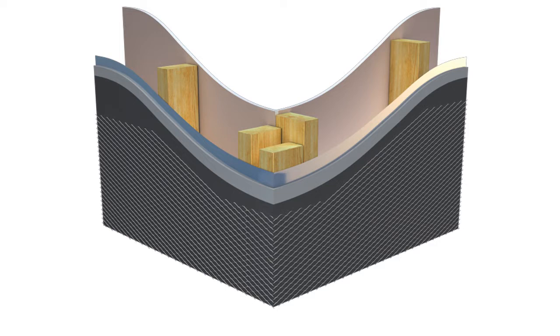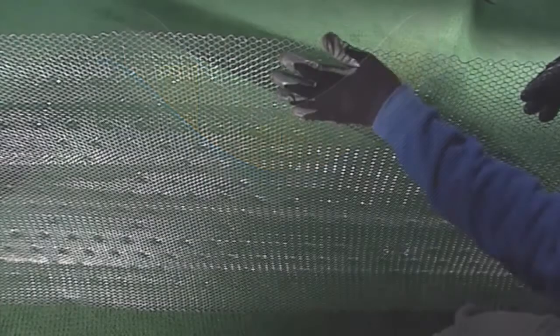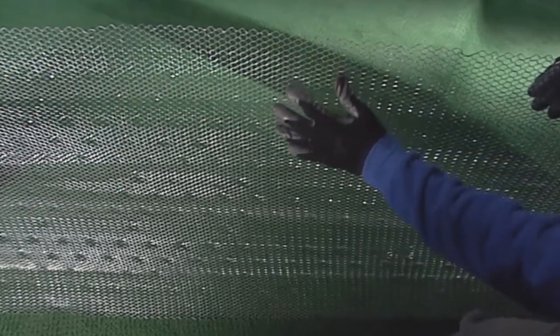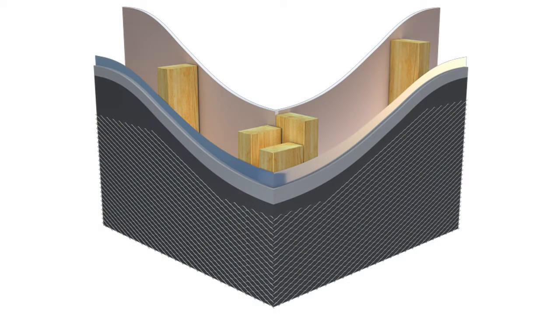When installing expanded metal mesh, be sure the grooved cups of the mesh are turned upward. This is easy to determine by running a hand over the surface. The texture should feel rough when running your hand downwards. These cups will prevent the mortar from sagging when applied to the vertical wall surface.